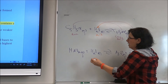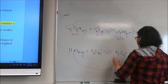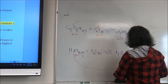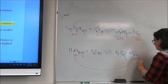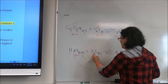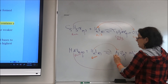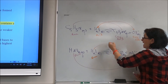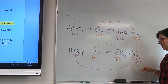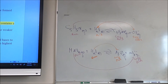For the second reaction, HNO₂ reacts with water to give H₃O⁺ and NO₂⁻. HNO₂ donated a hydrogen, so it's the acid and NO₂⁻ is its conjugate base. Water accepted the hydrogen to become the hydronium ion, so water is the base and H₃O⁺ is the conjugate acid. In any Bronsted-Lowry acid-base reaction you're going to have two conjugate pairs.